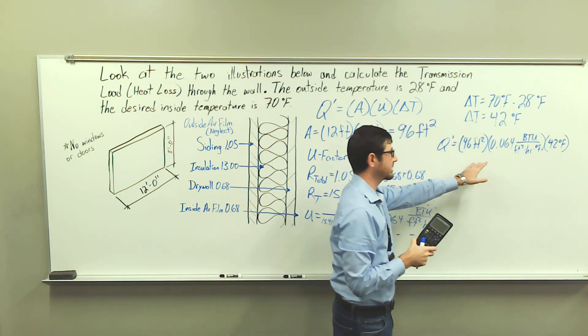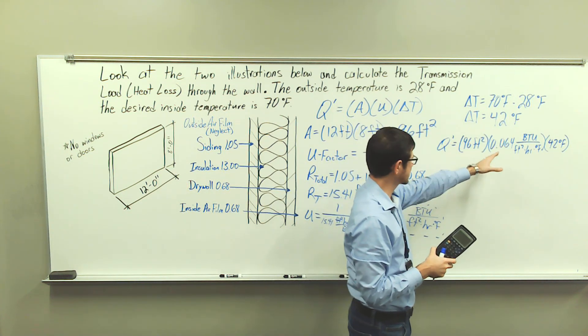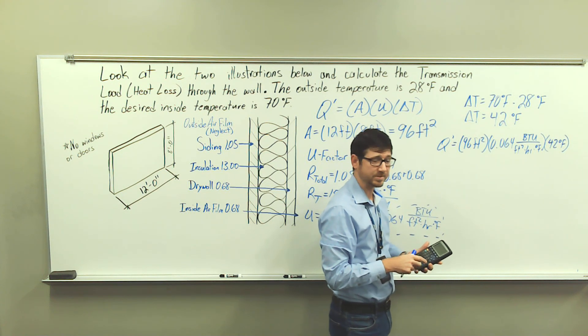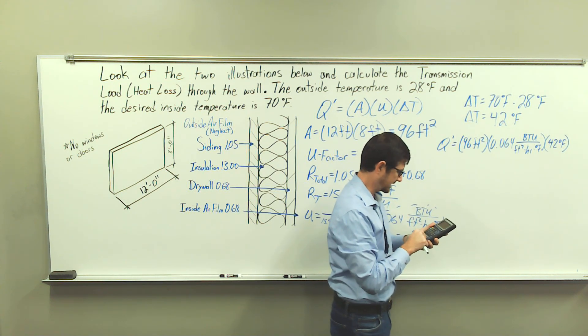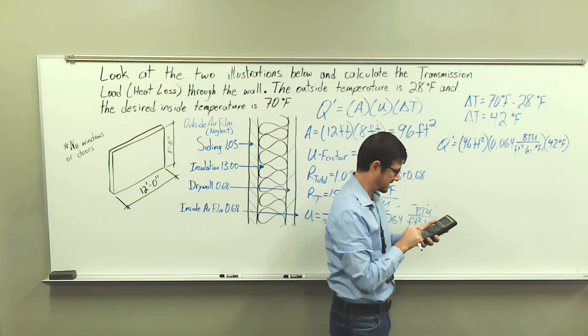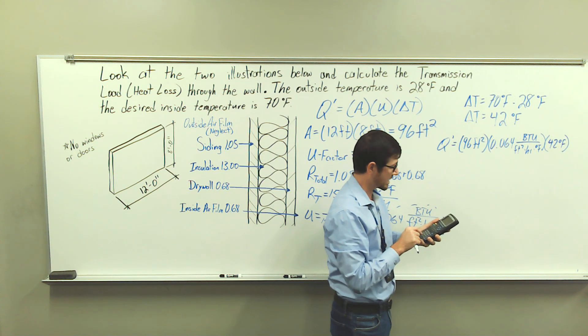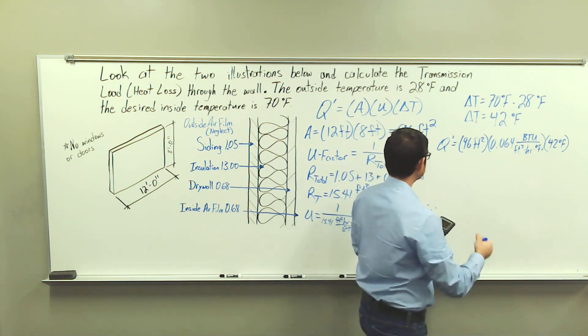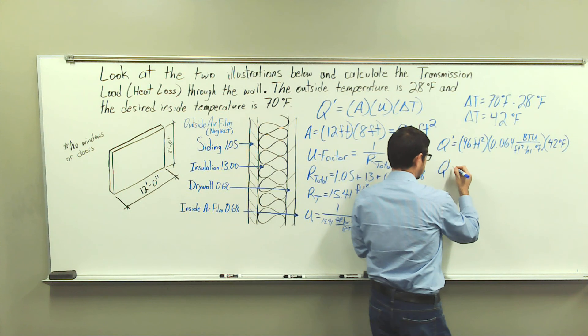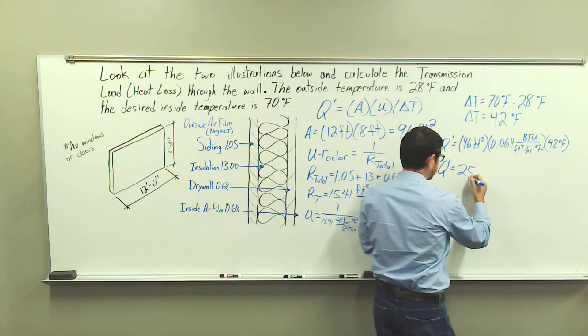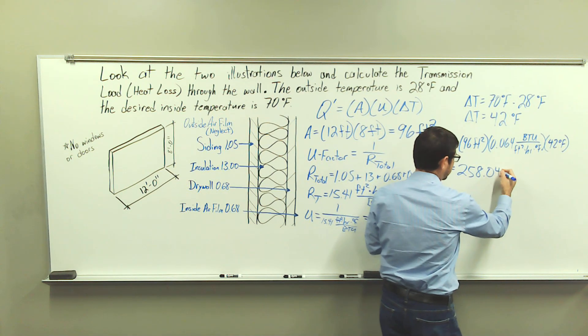So let's talk about the numerical value first. So we're just going to multiply the three values together. So 96 times 0.064 times 42. Q prime is equal to 258.048.